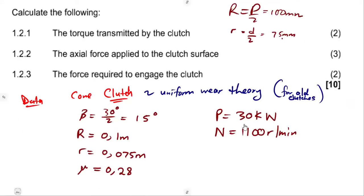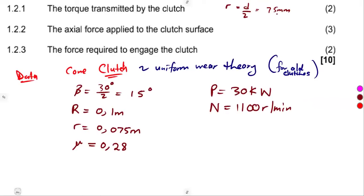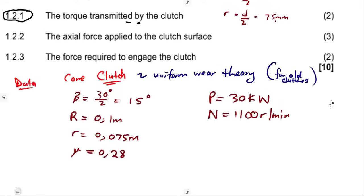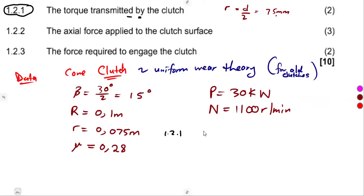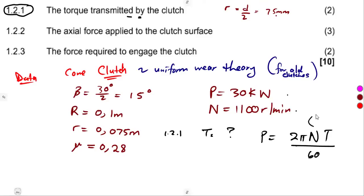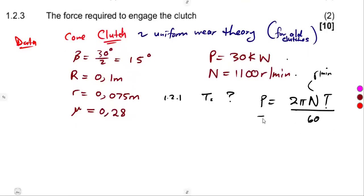Calculate the following. From that information, it is best to list the knowns and then calculate — it will be easier to see what is missing. Question 1.21: the torque transmitted by the clutch. There is power and there is speed, so that is a straightforward question. Power equals 2πNT over 60. We make torque the subject of the formula.